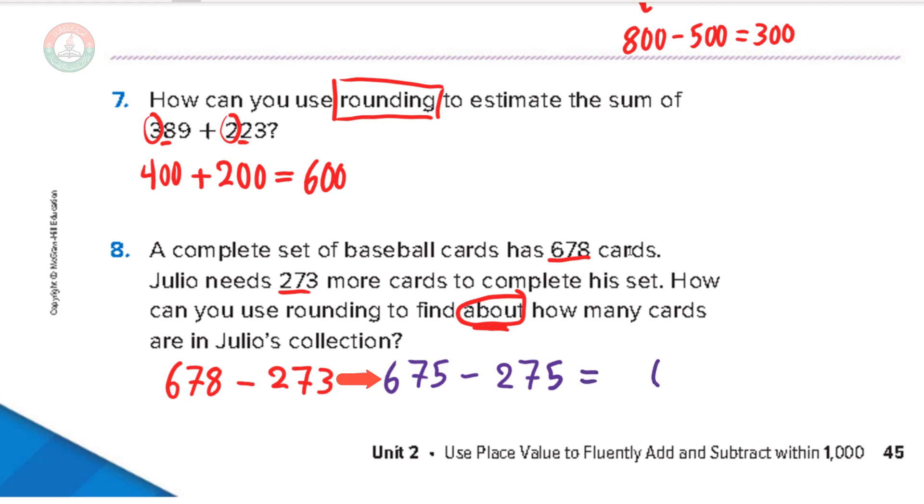75 minus 75 is 0. And 6 minus 2 is 4. So this is about, so we can say it's about 400 cards. So he has about 400 cards.